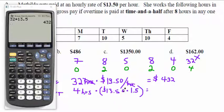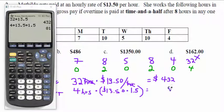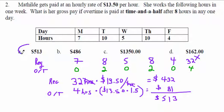The overtime pay: four hours times $13.50 per hour times 1.5. That's going to be $81. Add regular and overtime together: $432 plus $81 is $513. So your gross pay is $513. Clearly $162 was a dumb answer, and the high number sounded too high, so you were really only choosing between those two reasonable answers.